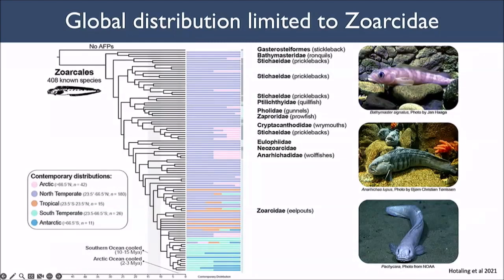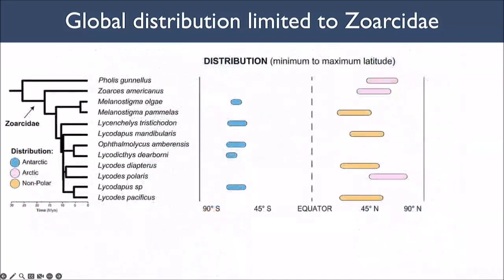The motivating hypotheses for this work were that copy number of the antifreeze protein would vary with latitude — with more copies the closer you get to each pole — and that antifreeze protein diversity among copies functions to enhance freezing point depression. We did a phylogeographic study to understand the global distribution of the Zoarcidae and how this relates to copy number evolution. Much of this was driven by opportunistic sampling from museums, which I really want to plug — their collections are invaluable for sequencing genomes from appropriately collected samples.